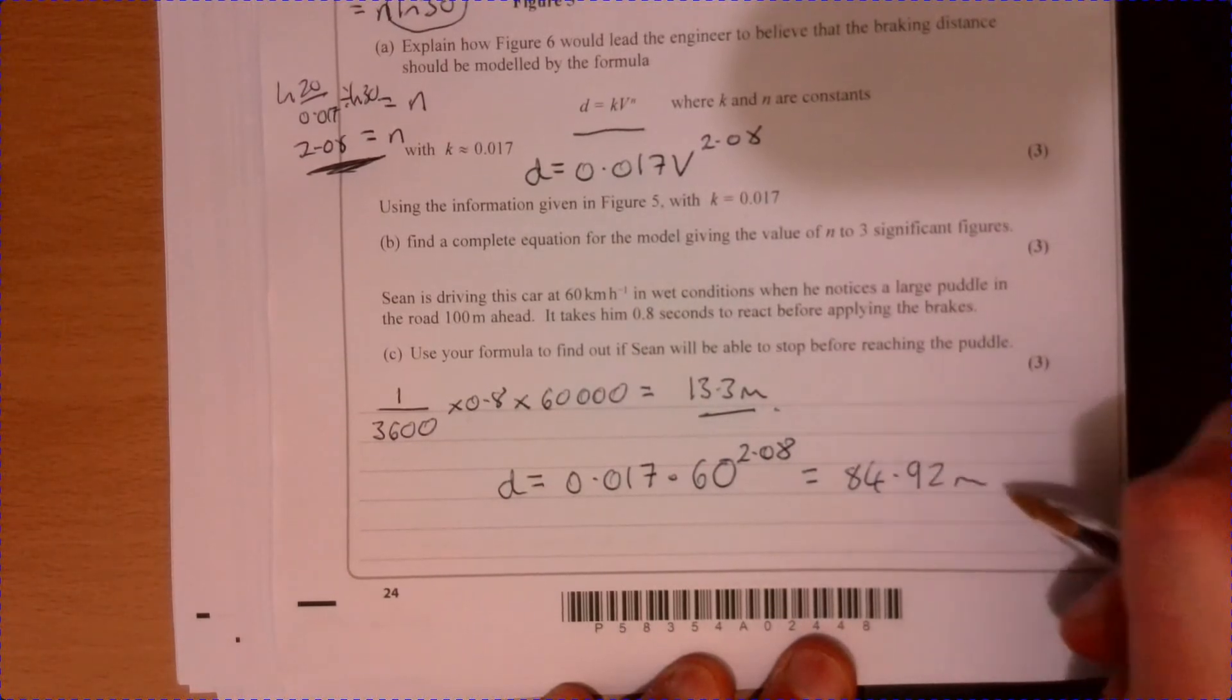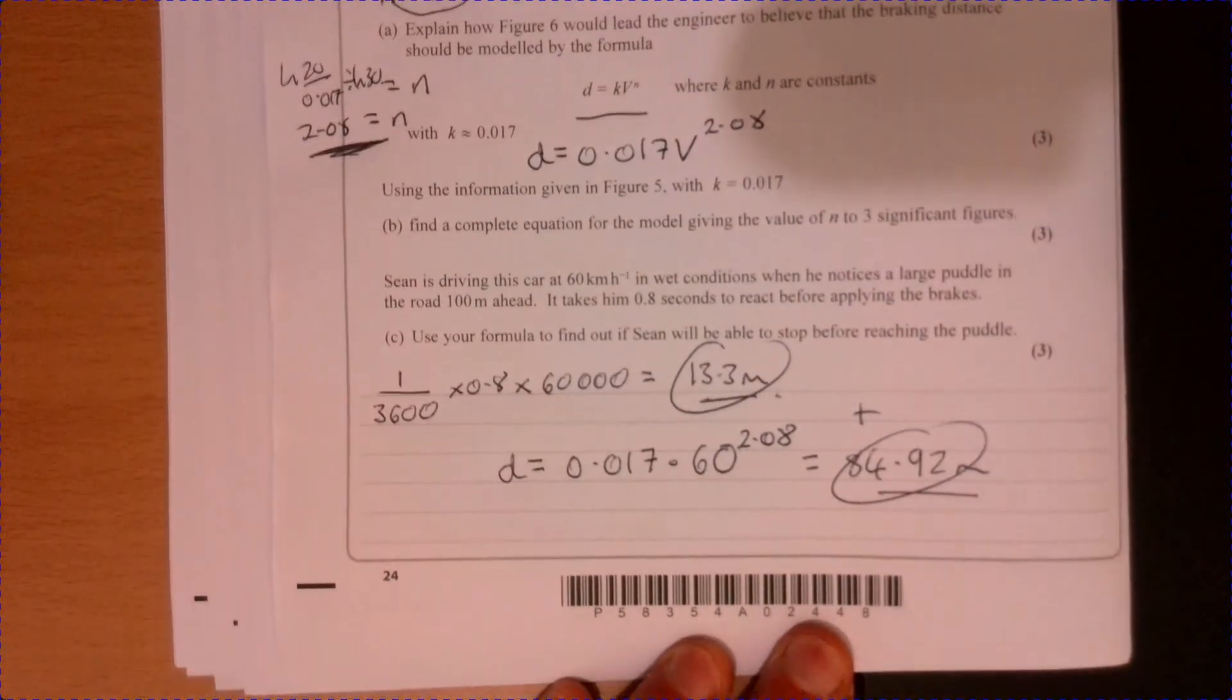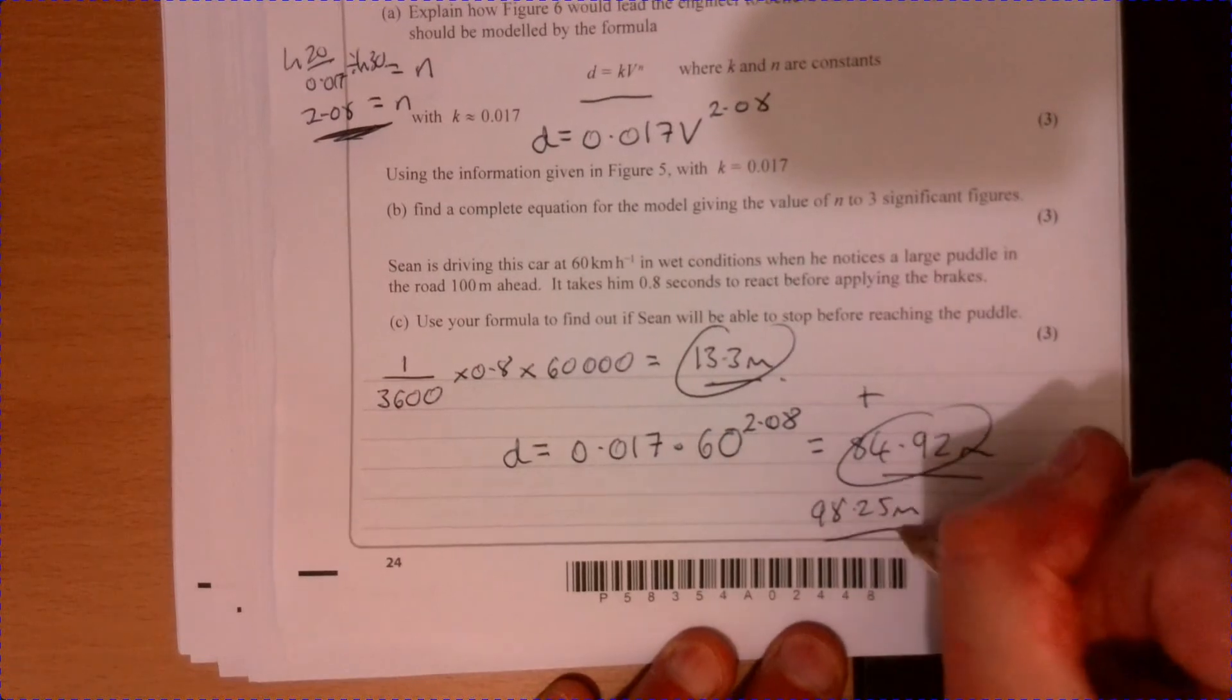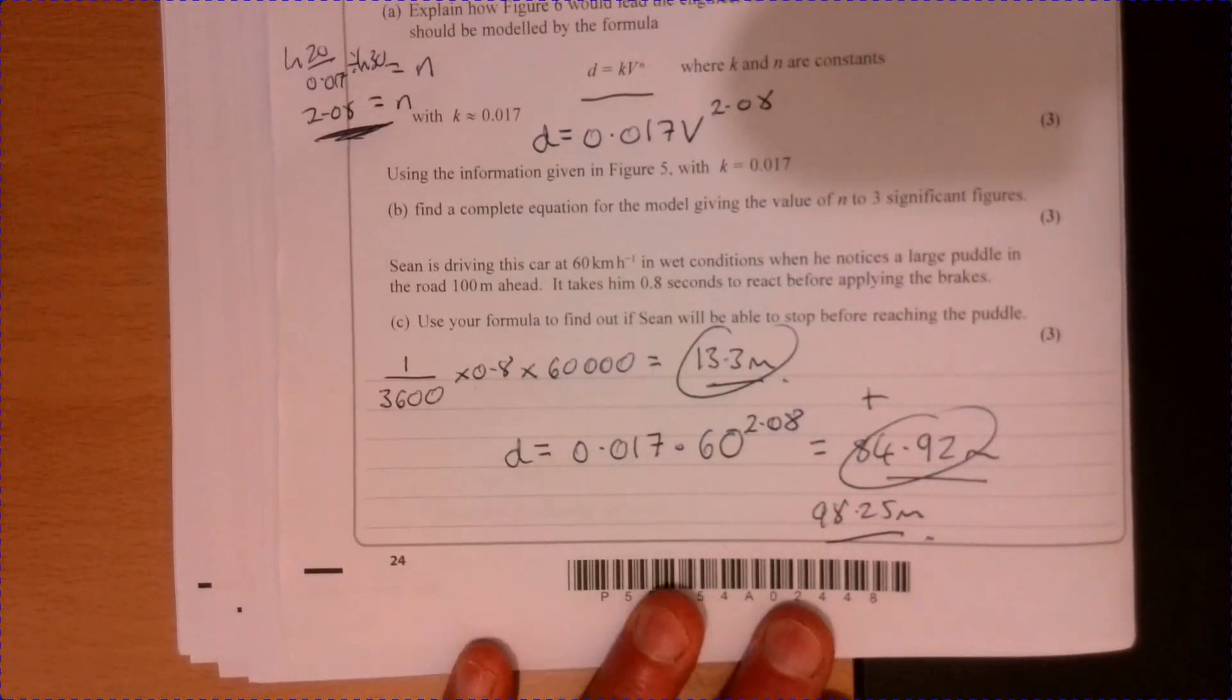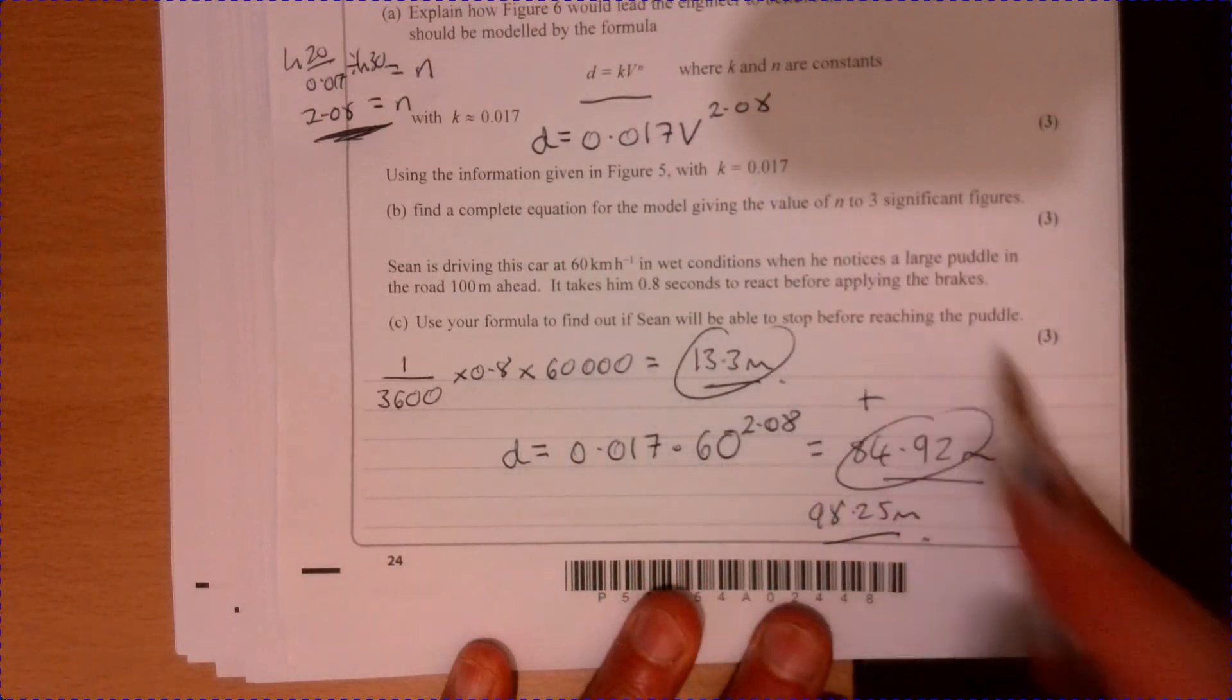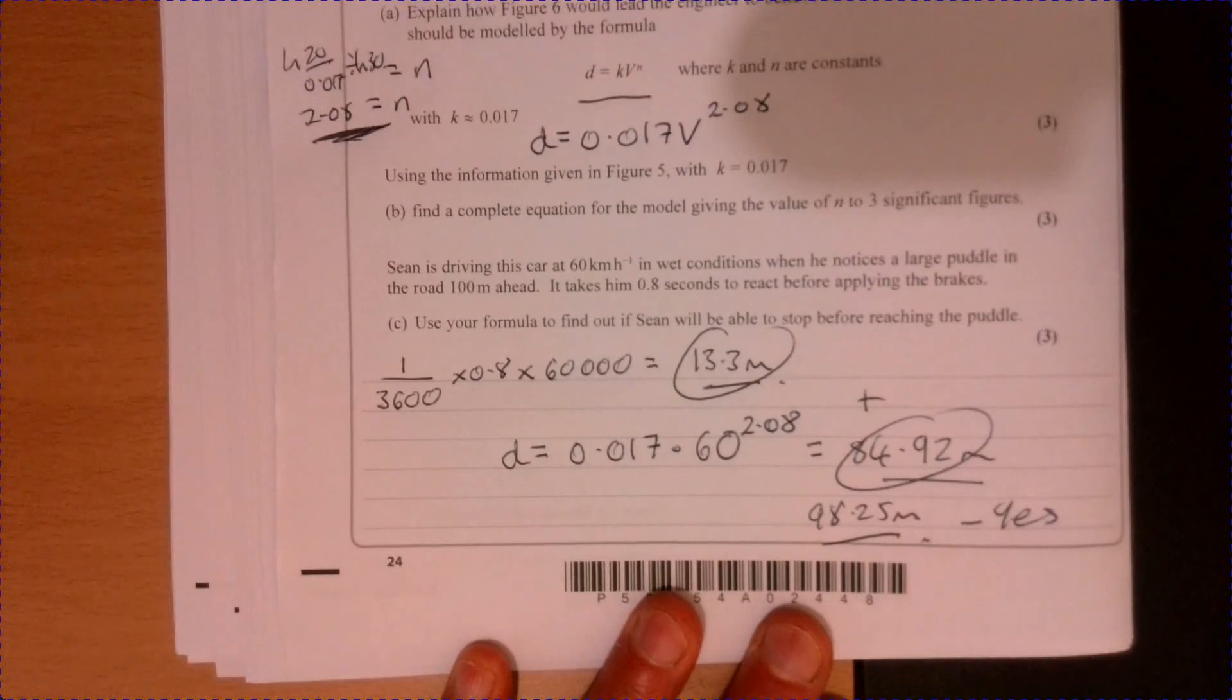Add these guys together and we get 98.25 meters. Don't forget to answer the question: use your formula to find out if Sean will be able to stop before reaching the puddle. Yes, because that's less than 100 meters.